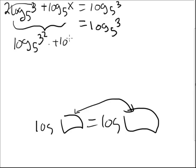Plus log base 5 of x equals log base 5 of 3. And we can rewrite this as log base 5 of 9x, because 3 squared is 9, and then the plus turns into multiplication.